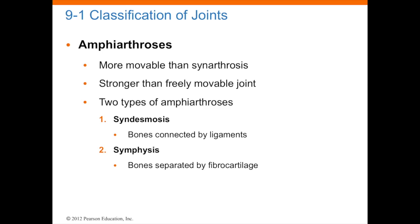Amphiarthrosis joints are a little more movable than the previous. They are stronger and a little bit more freely movable. There are two types: syndesmosis, which are bones connected by ligaments, and symphysis, bones that are separated by fibrocartilage. There is a difference between ligaments and fibrocartilage — ligaments connect bone to bone and are actually a little bit less dense than fibrocartilage. Fibrocartilage is a lot rarer in the body compared to ligaments, and fibrocartilage does have a tighter connection between bones.